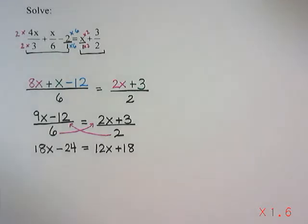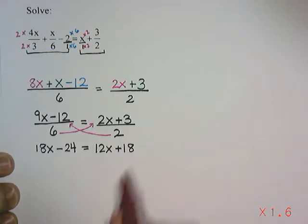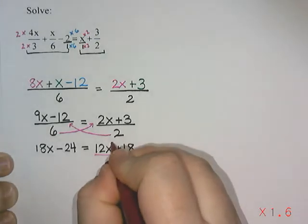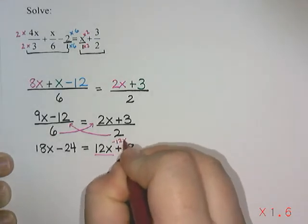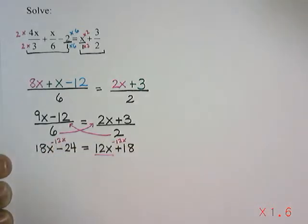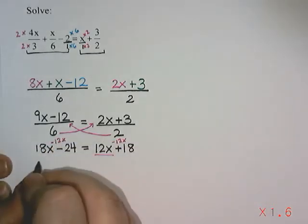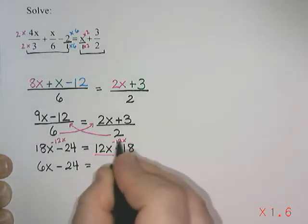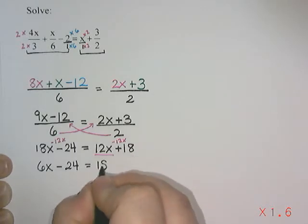From here, we're just going to solve the equation. First thing I want to do is get all of the x's on one side. My personal rule is that I will move the smallest number. So that would be the 12x is smaller than 18. So I'm going to take 12x away from both sides. 18x take away 12x leaves me with 6x take away 24. And then on this side, we're just left with that positive 18.